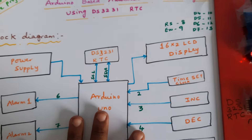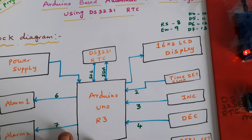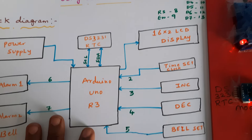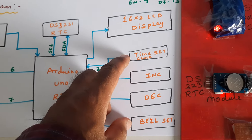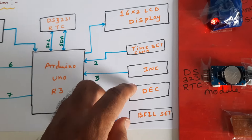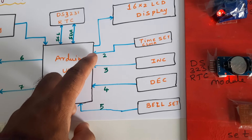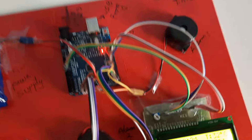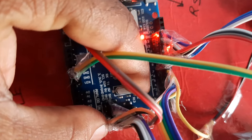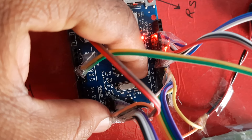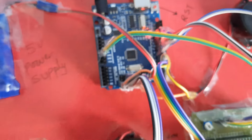This is the total block diagram for the Arduino-based automatic school bell timer using RTC. It includes alarm 1 and alarm 2 connected to the Arduino Uno R3 board, along with set time, increment, decrement, and push buttons — 4 push buttons connected to pins 2, 3, 4, 5. Alarms are on pins 6 and 7. The LCD is connected to pins 8, 9, 10, 11, 12, and 13.